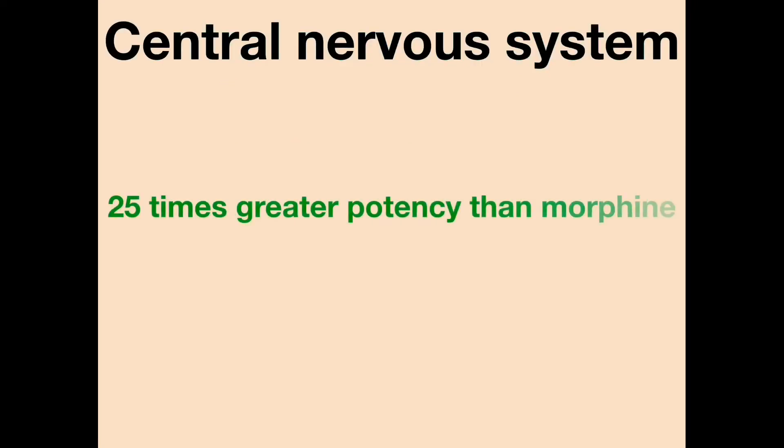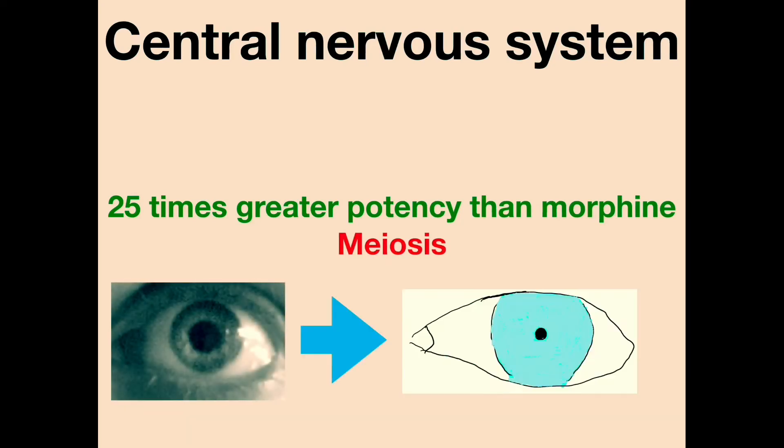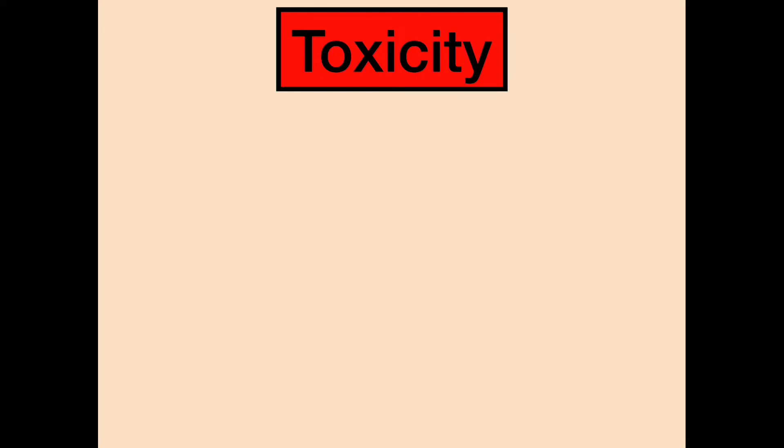With regard to the central nervous system, it is 25 times more potent than morphine and, like other opioids, it causes miosis. Its toxicity profile is similar to other opioids — it causes nausea and vomiting.